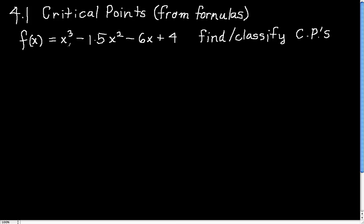Okay, so our function in this example is x cubed minus 1.5x squared minus 6x plus 4 and we want to find and classify its critical points. So the first step is you need to take the derivative. We can find the derivative of f using the power rule. So f prime of x is 3 times x squared minus 2 times 1.5 is 3x to the 1 and minus 6.